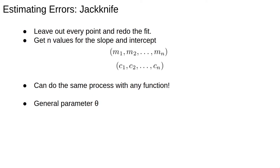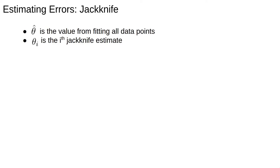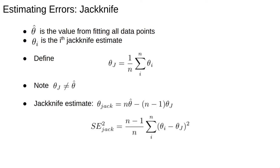Define theta hat as the value you get by estimating the parameter using all n data points, not leaving any out. The ith jackknife estimate is theta i, the estimate of the parameter you get when you leave out the ith data point. We define theta j as the average jackknife estimate. Note that theta j is not equal to theta hat. The jackknife estimate of the parameter is then theta jack, which is n times theta hat minus n minus 1 times theta j, and the estimate of standard deviation can also be calculated.